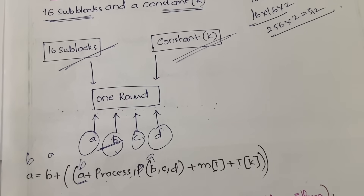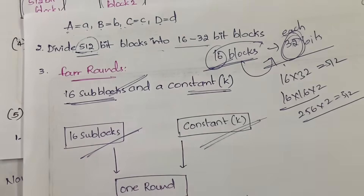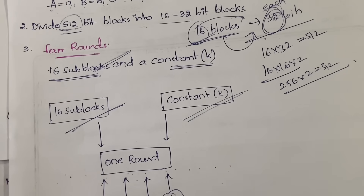We have four variables A, B, C, D, which is why we perform a total of four rounds. That's all about the MD5 algorithm — you divide your message into sub-blocks and compute a message digest. Next we will learn the SHA algorithm, which is very similar to MD5. Thanks for watching.